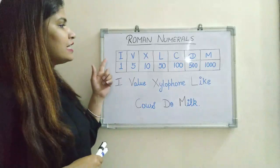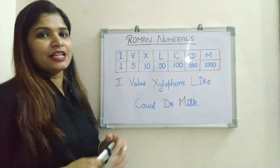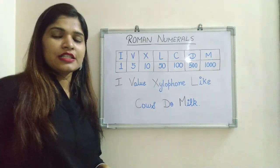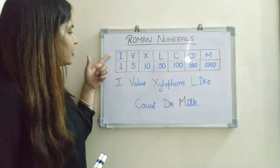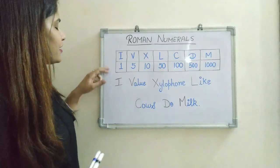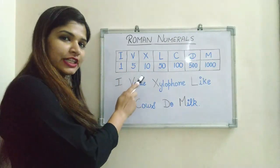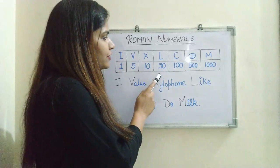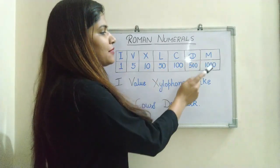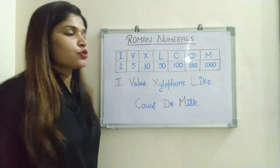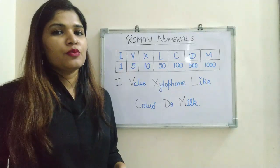The first rule covers the standard letters of the alphabet used by the Romans to denote their numerals. Let us see them one by one: I stands for 1, V stands for 5, X stands for 10, L stands for 50, C stands for 100, D stands for 500, and M stands for 1000. These are the seven letters of the English alphabet used for writing Roman numerals.